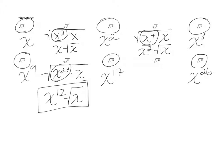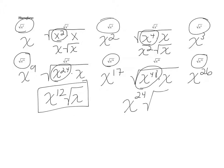So notice that for all the ones with odd exponents, the radicand is always x. What makes these exponents odd is that they have one extra — the even number comes right before it. So basically, you take one away from that exponent, leave the one inside, and take half of what's left over. Leave one inside, take half of what's left over. That's the pattern every time.